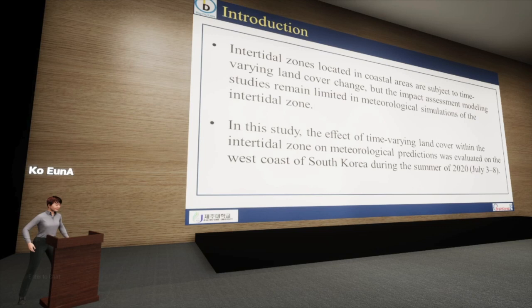Therefore, in this study, we applied time-varying land cover in the intertidal zone to a three-dimensional meteorological model and assessed the impact of time-varying land cover in the intertidal zone on coastal meteorological changes.